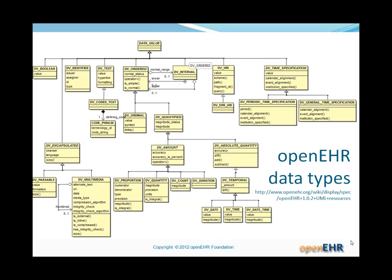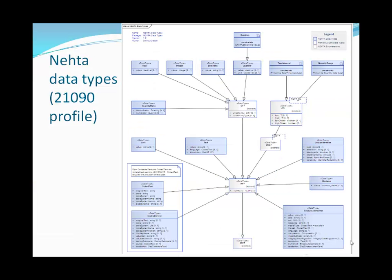So there's the OpenEHR data types. It just gives you an idea of the kinds of data types that we tend to use in the health industry. And each one of those types, if you look up near the top left for example, DV_Identifier, DV_Text, DV_Ordinal, a bit down to the right from DV_Text, all of these types have numerous or a number of fields. They're not just single strings or integers. So constraining them may be an interesting exercise as well. There's another set of data types from the Australian National Health Transition Authority. These are based on a standard notice ISO 21090.